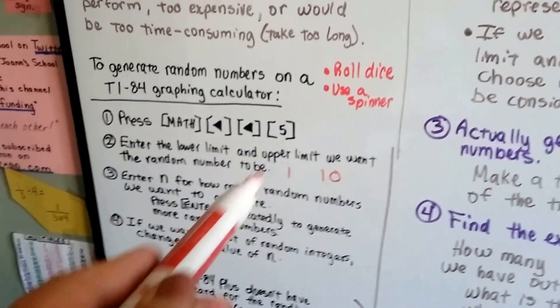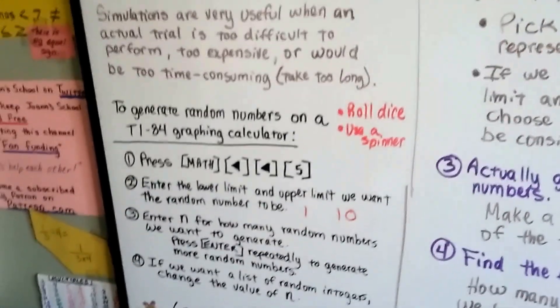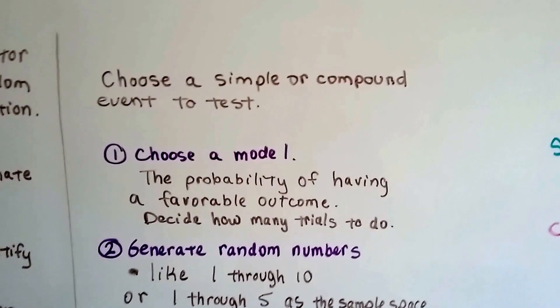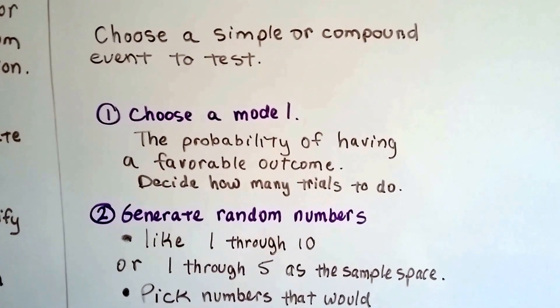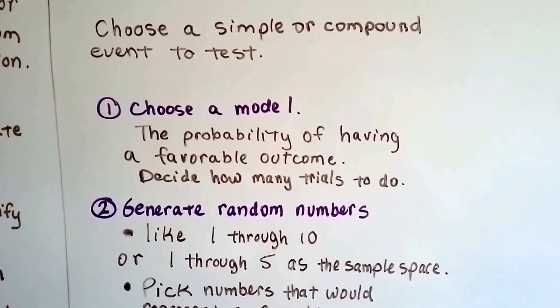If you don't want to use technology, you can roll dice or use a spinner and do it the old-fashioned way. So the first thing you're going to do is choose a simple compound event to test. You choose the model, the probability of having a favorable outcome, and you decide how many trials to do.